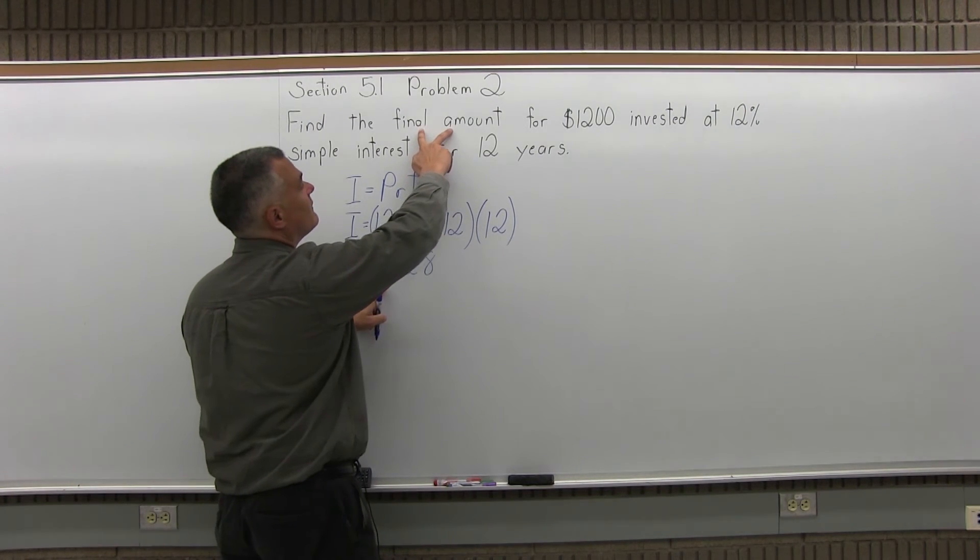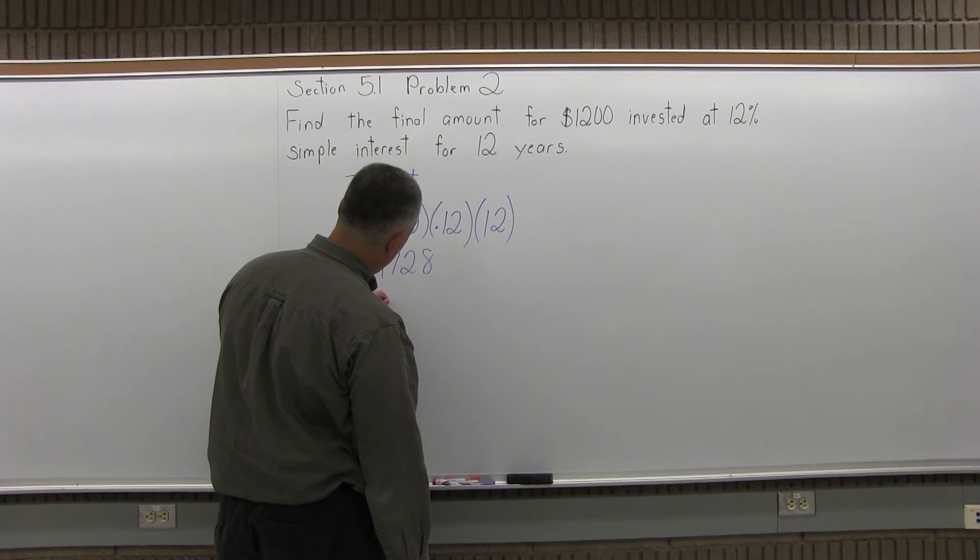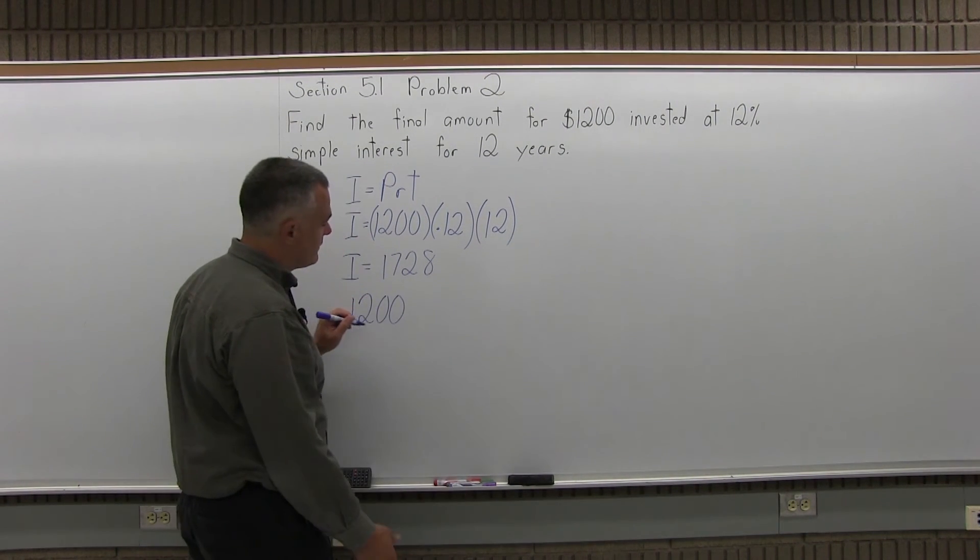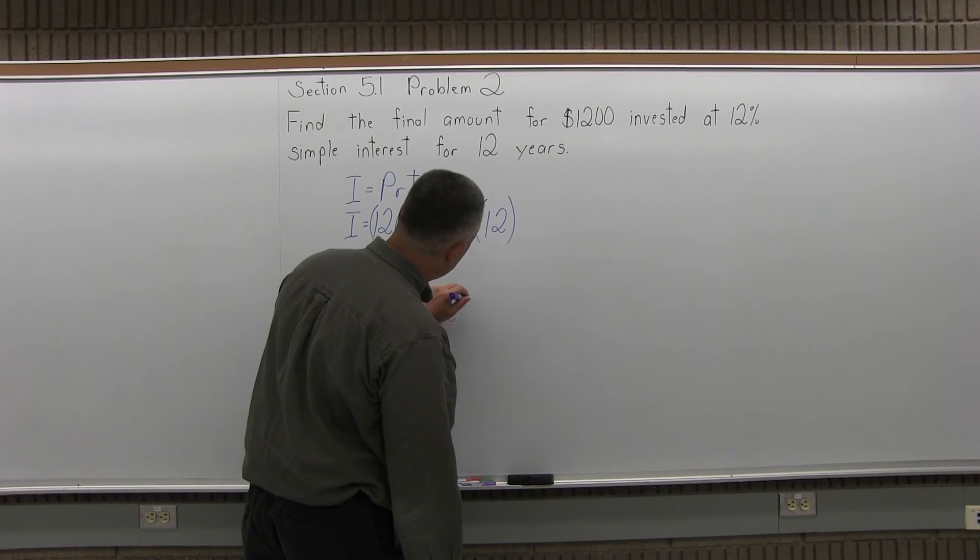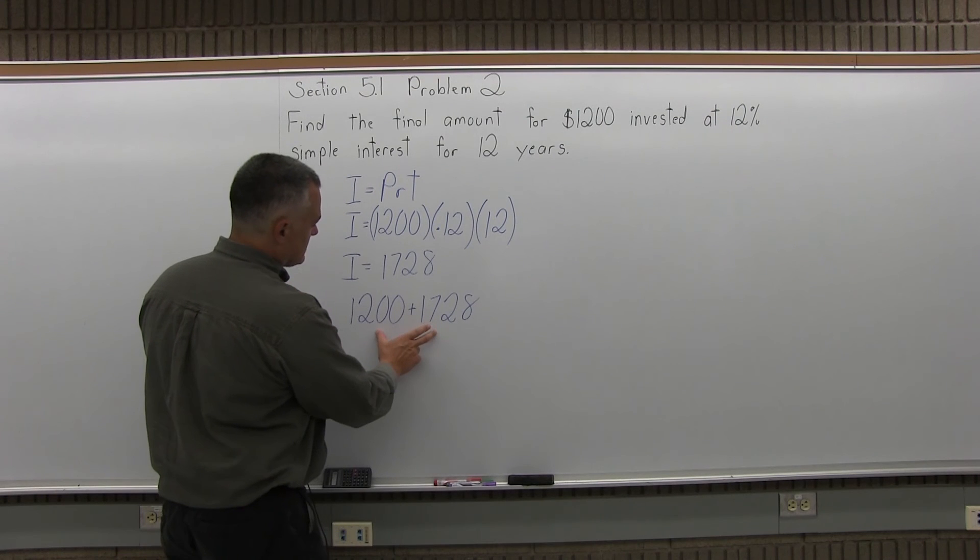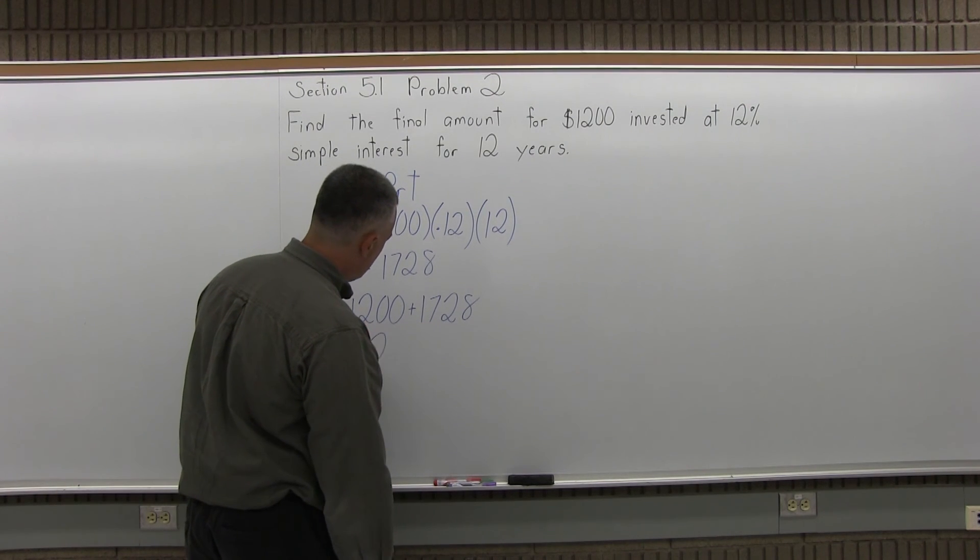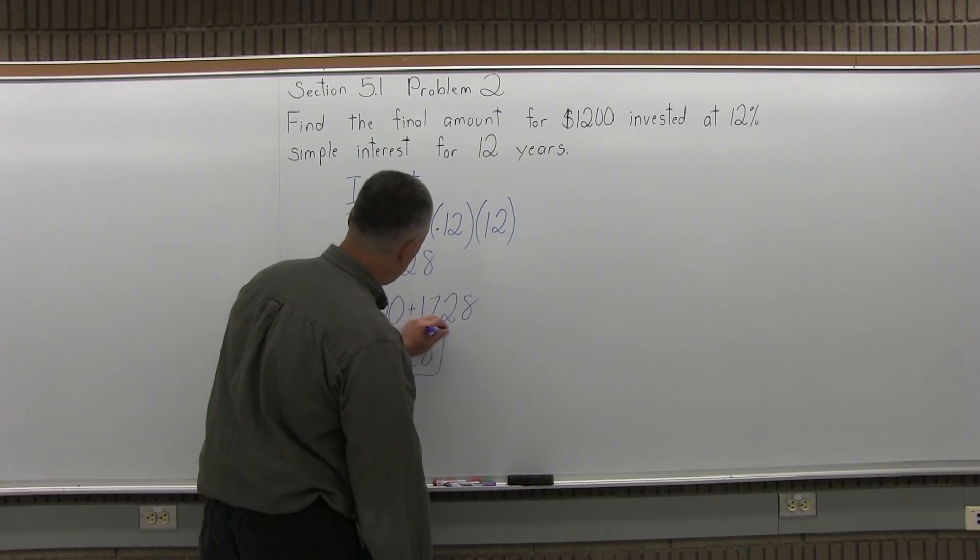The question says find the final amount. So you started in the beginning with $1,200 of principal that you invested, and then you earned $1,728 of interest. So the final amount is the sum of those two, which is $2,928 altogether. That's the final amount in your account.